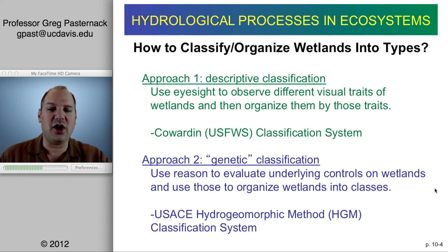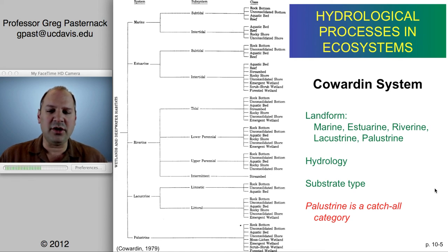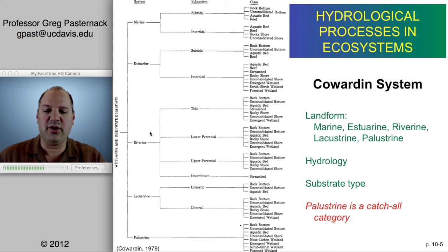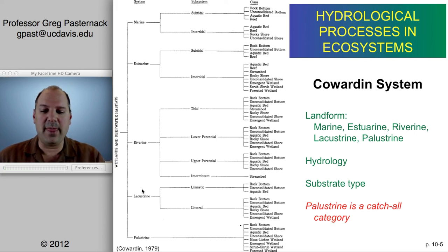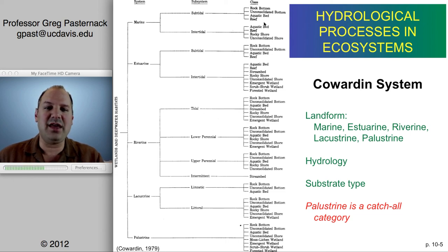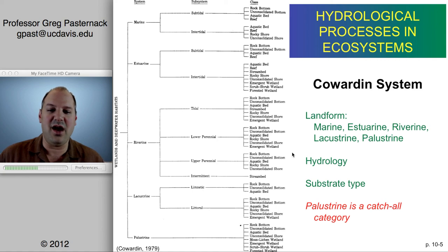The Cowardin system is shown here as a hierarchical clustering tree. It works from left to right, with the main systems being marine, estuarine, riverine, lacustrine, and palustrine — which is pretty much a catch-all for whatever doesn't fall into the other categories. By the time you get down to the class level, it becomes more descriptive: what kind of substrate — rocky, reef, mud, and so on.